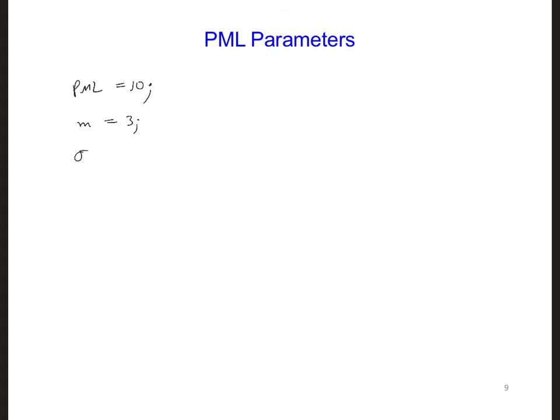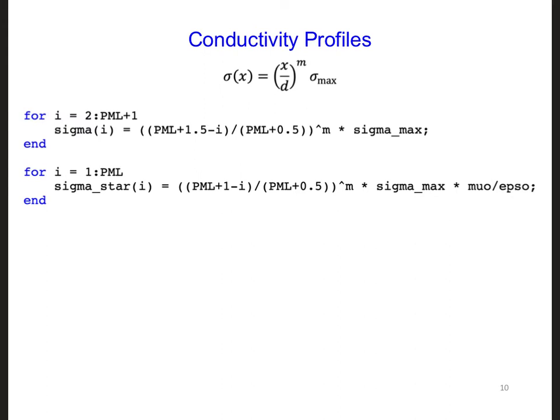And we can have sigma max equal to the same expression as before, 0.8 times m plus 1 over eta naught delta, or delta x, we're just calling it delta here, mu r and epsilon r. So those can just be equal to 1. This is what we used earlier for the conductivity profiles in the one-dimensional PML.